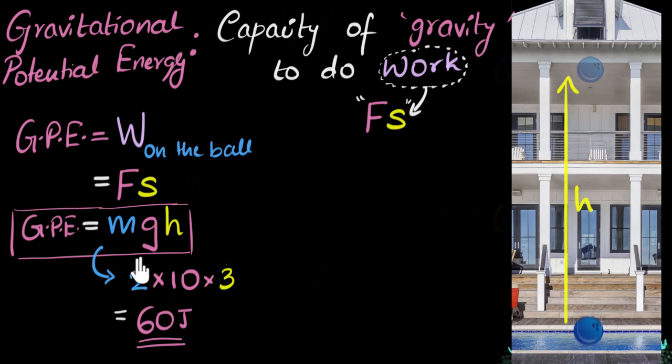And what I like to do is whenever I'm calculating potential energy of any object, I will take the lowest point that object can go as my ground and calculate the height from there. So if I'm dropping the ball on the first floor itself, then to calculate the potential energy of the ball over here, I would just take this as the height.